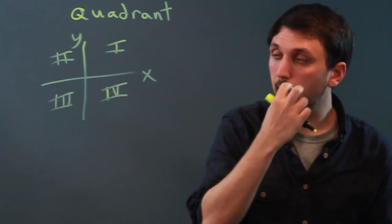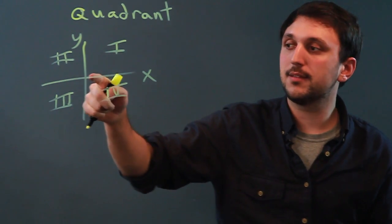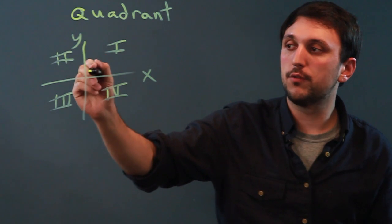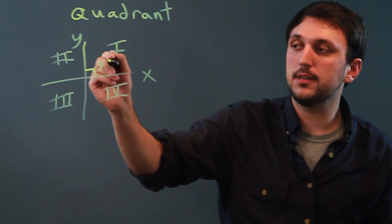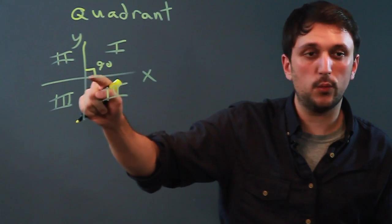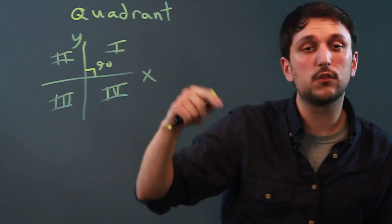So a quadrantal angle is any angle that exists on one of the axes. So for example, if we had an angle like this, well that's 90 degrees and that is on the y-axis and the x-axis, so it's quadrantal.